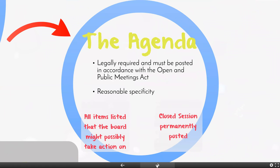First, the agenda is legally required and it must be posted in accordance with the Open and Public Meetings Act — that's going to be on the public meeting notice website. You're going to have to have it up 24 hours in advance, and hopefully you're going to have it ready well in advance of that 24 hours because you're going to get this packet out to your board members so that they have enough time to review it. Things listed on your agenda must have reasonable specificity, as written in the Open and Public Meetings Act.